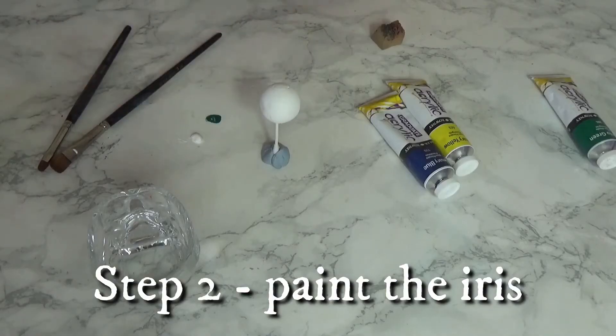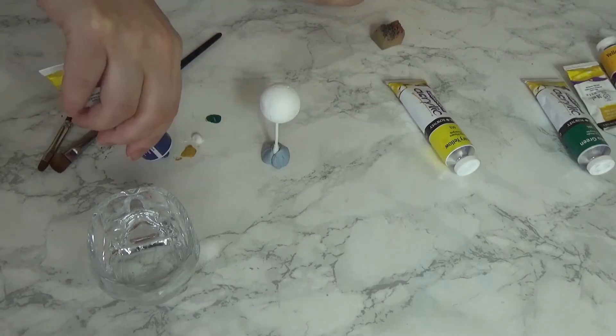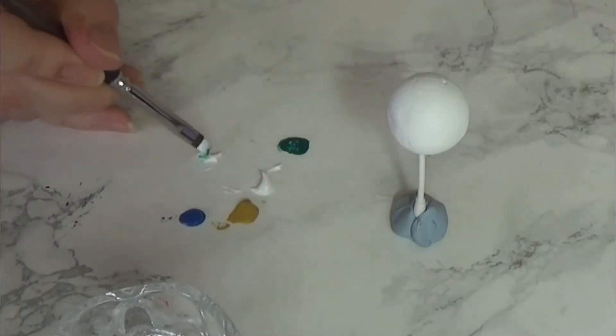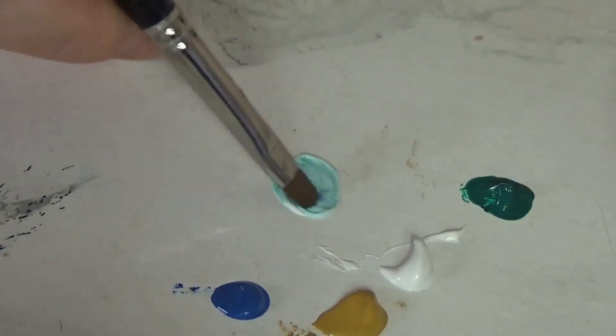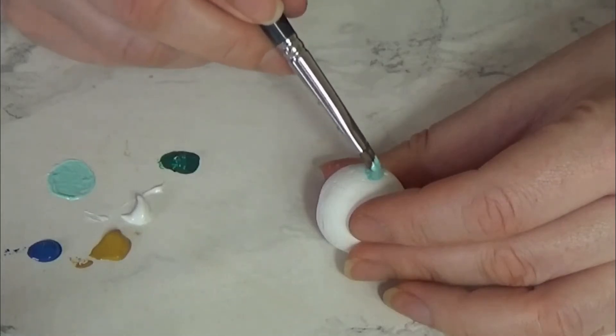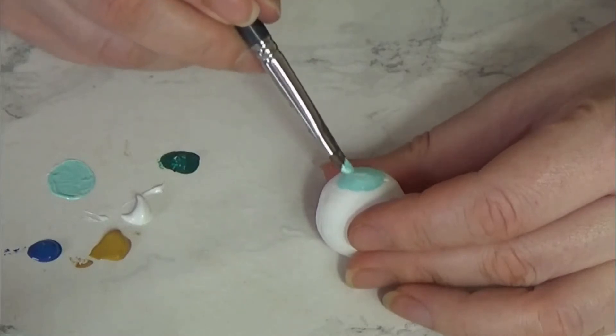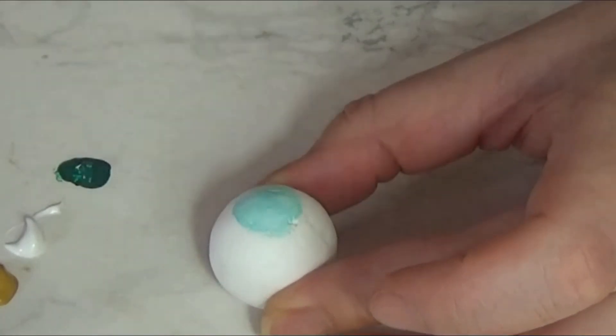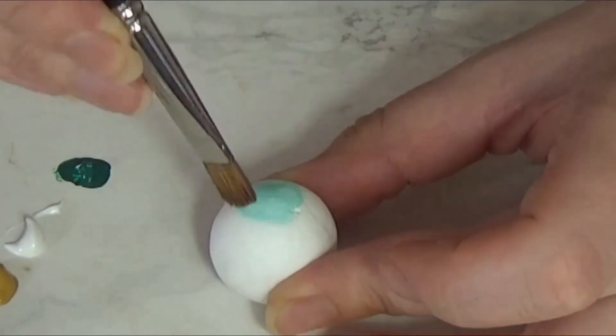Step number two: you want to paint your iris. I decided to go for a kind of greeny-bluey eye. You can go for whatever color you like, but just be aware that eyes are made up of lots of different colors, lots of different specks of color. They're not all one uniform color, so just get some really good reference pictures of eyes and start building up your color in stages.